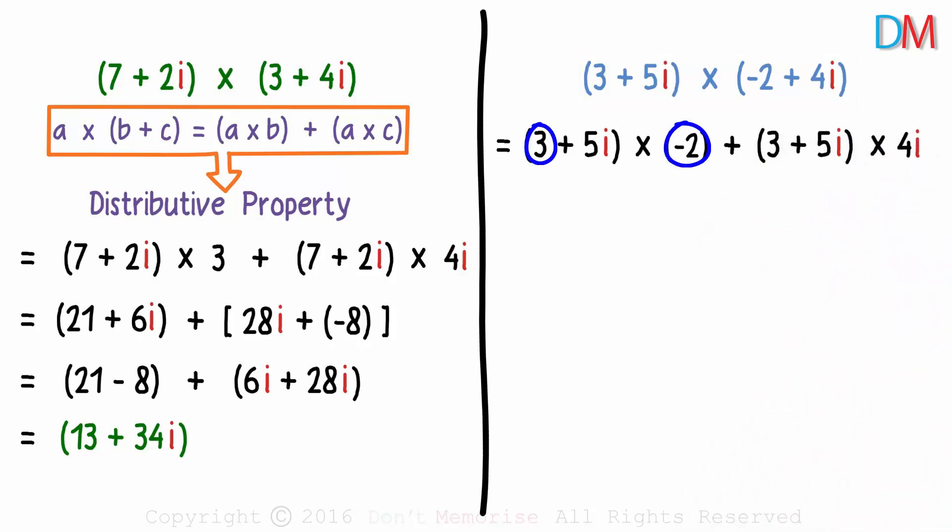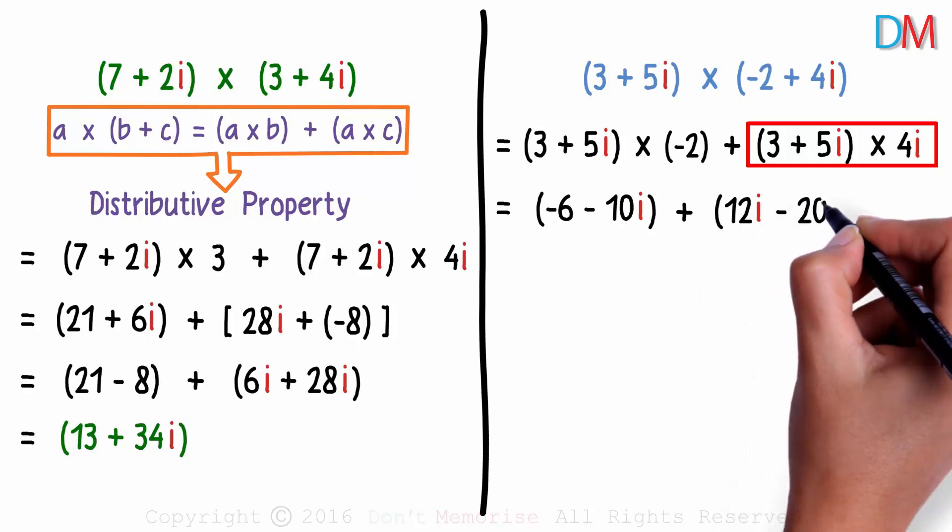3 times negative 2 is negative 6 and 5i times negative 2 is negative 10i. We get negative 6 minus 10i. Similarly, 3 plus 5i multiplied by 4i will give us 12i plus 20i squared. As i squared is negative 1, this can be written as 12i minus 20.